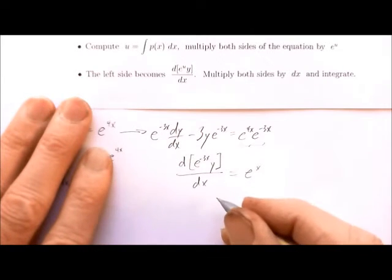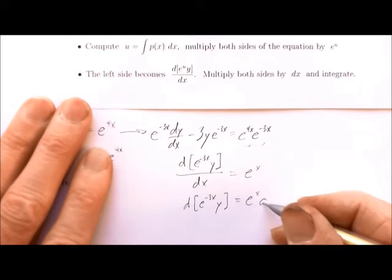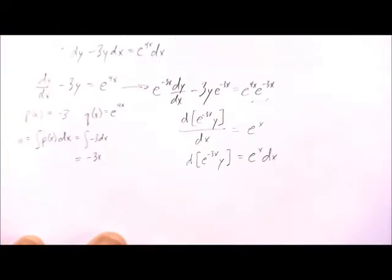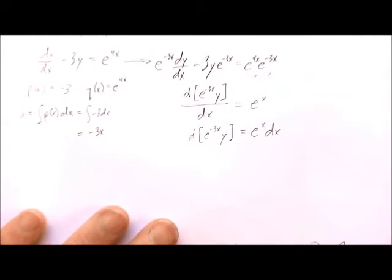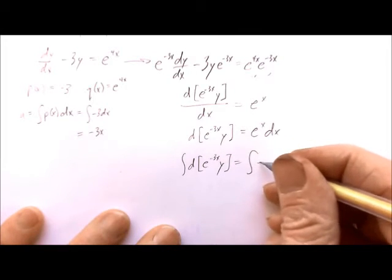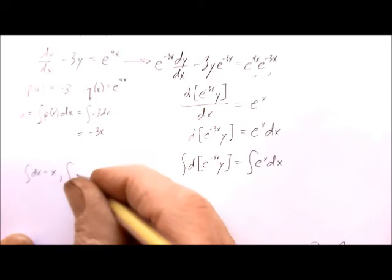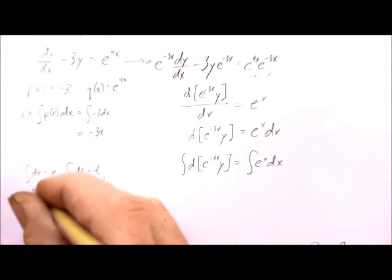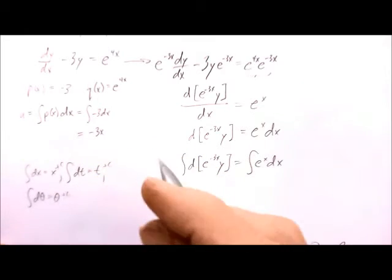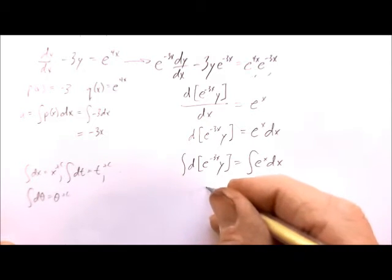Once we're here, we multiply both sides by dx, giving us d(e^(−3x) · y) equals e^x dx. Now we integrate both sides. Remember: the integral of dx is x, the integral of dt is t, the integral of dθ is θ — the integral of d(something) is just that something. So the integral of d(e^(−3x) · y) is just e^(−3x) · y.